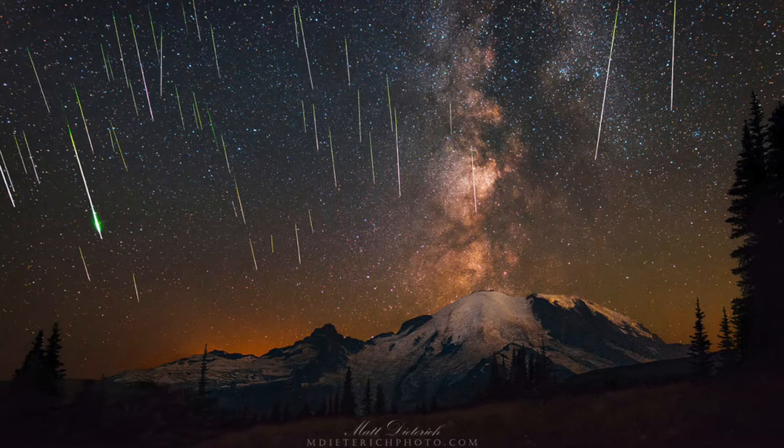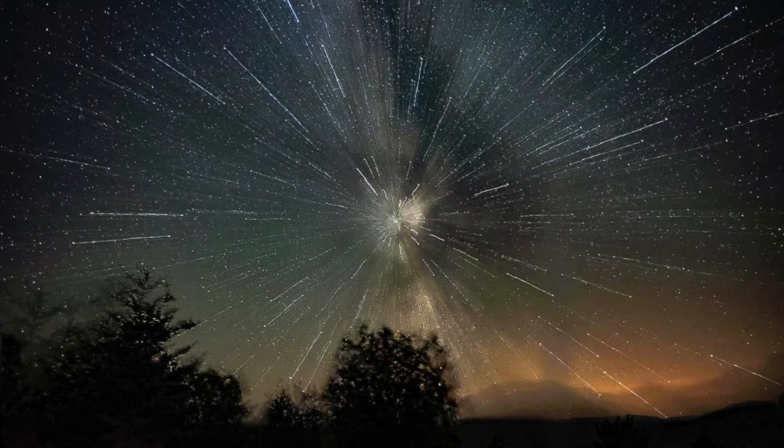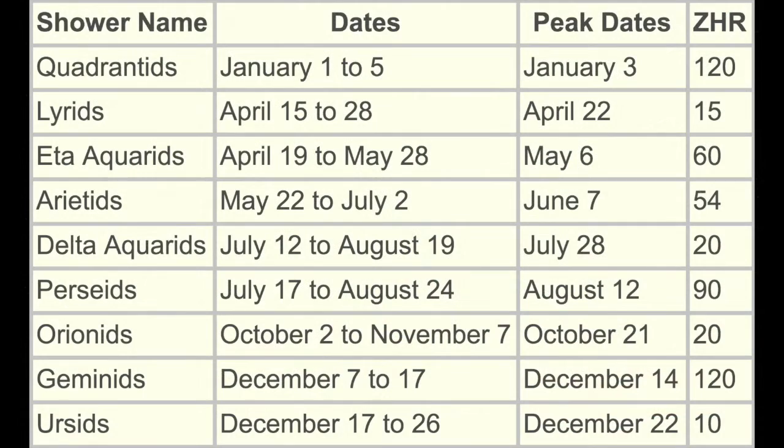But what are they, and how are they so predictable? We've even named these meteor showers based upon where in the sky they appear to radiate from, such as the Leonids, the Perseids in July.